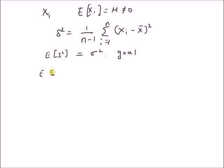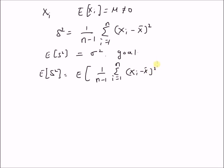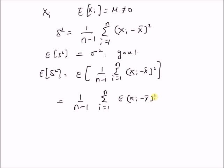Starting with the definition of expectation of s squared, we have expectation of 1 by n minus 1, summation i equal to 1 to n of x_i minus x̄ whole square. Since expectation is a linear operator, we have 1 by n minus 1, summation i equal to 1 to n, expectation of x_i minus x̄ squared.